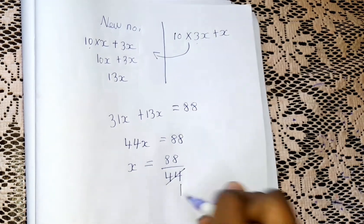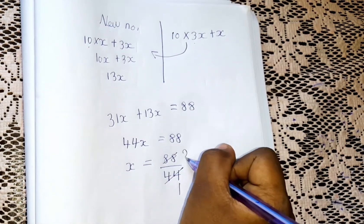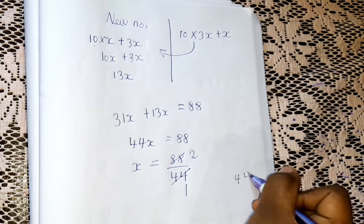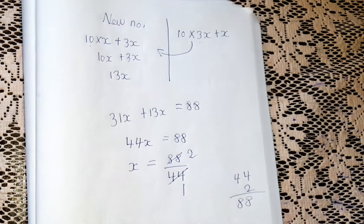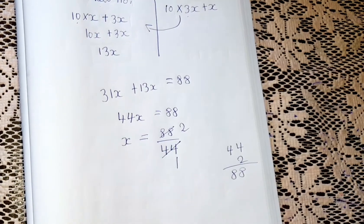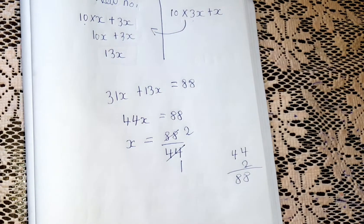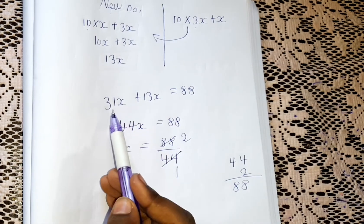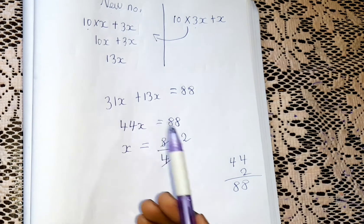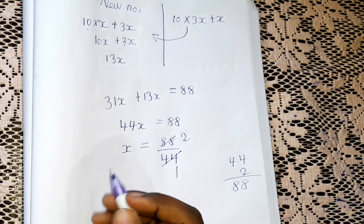We can cancel by the 44 table. 44 times 2 is 88 — let's verify: 4 times 2 is 8, 4 times 2 is 8, so it's 88. We can cancel, and we get x equals 2. But we still need to find the actual original number, not just x.